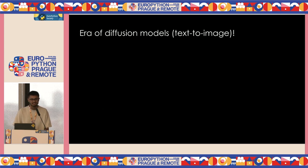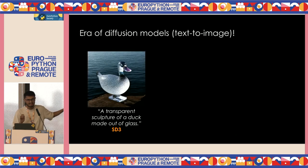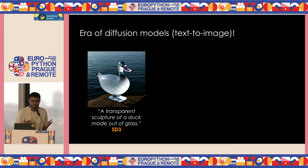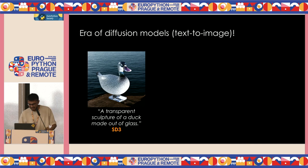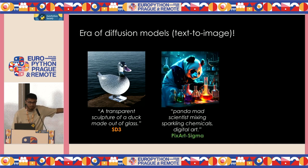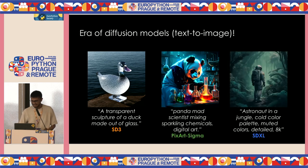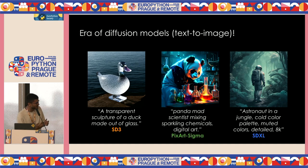So, diffusion models — text to image. This is Stable Diffusion 3, the latest and greatest from Stability AI. It's an open model. I hope we can agree that a transparent sculpture of a duck made out of glass cannot really exist in reality. But with these models, they have got a tremendous creative ability to come up with something resembling the input prompt. And then we have Pixar-style, a cute little panda acting as a mad scientist, and an astronaut popping out of nowhere in a jungle.